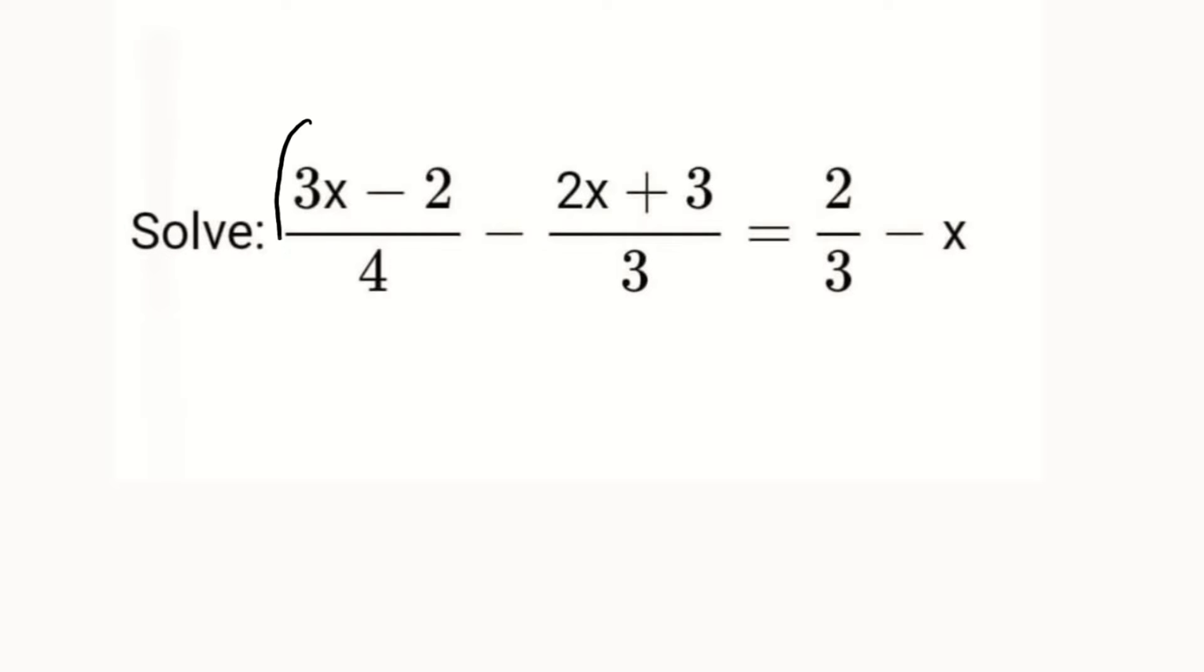This is what you're going to do: multiply all of these terms by 12. This simplifies to 12 multiplied by (3x - 2) divided by 4, minus 12 again...